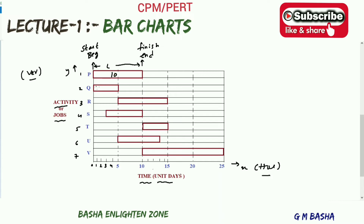Activity R runs from 5 to 15, around 10 days. Activity S starts around day 7 and spans approximately 7 to 7.5 days. Activity T spans 10 to 15, which is 5 days. Activity U spans 5 to 10. Activity V spans 10 to 15, giving an overall project duration of around 50 days.